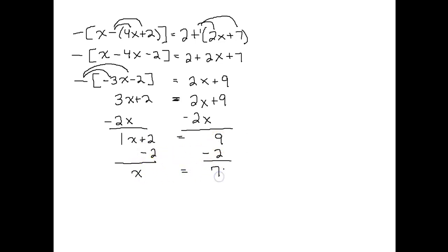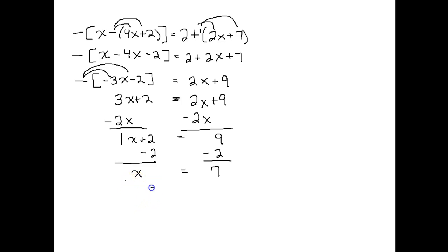So we get x equals 7. This example didn't require the multiplication property of equality, but if there had been a number in front of x, I would divide both sides by it, or if x was divided by a number, I'd multiply both sides by it. But x is already by itself, so the solution set has 7 in it — 7 is the solution.